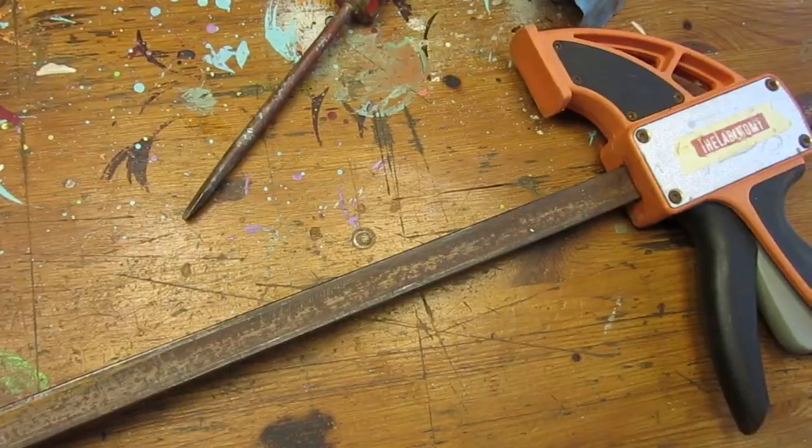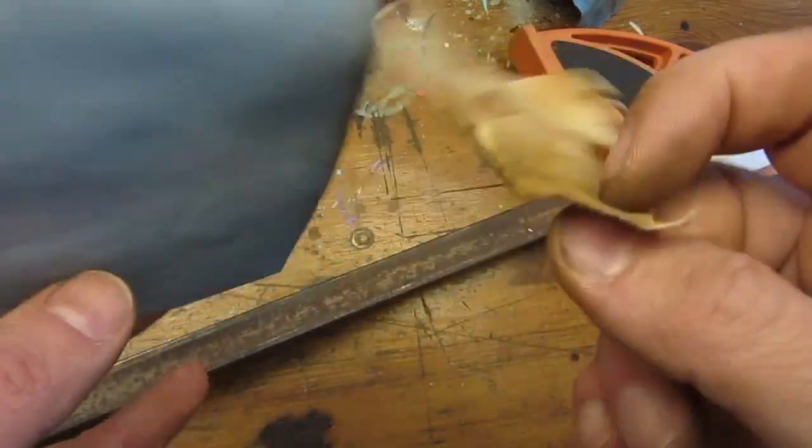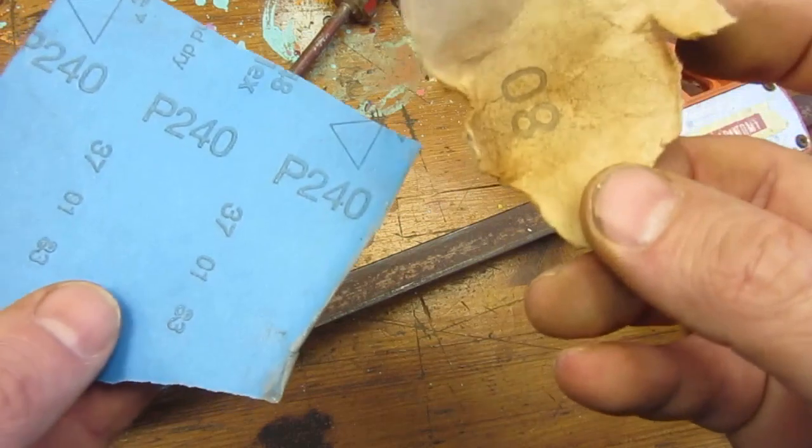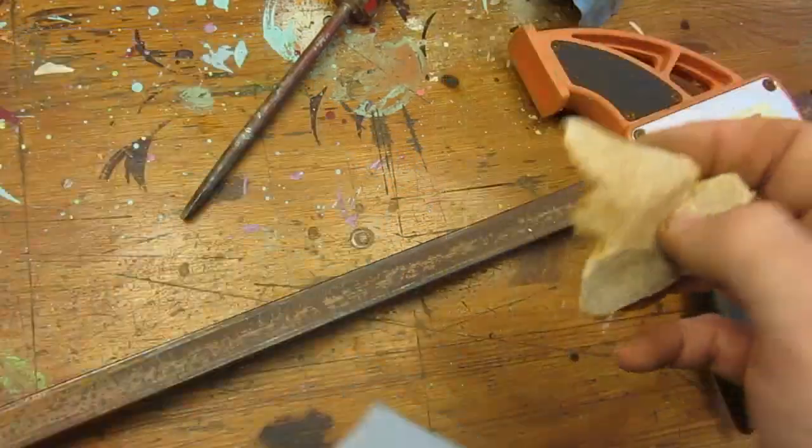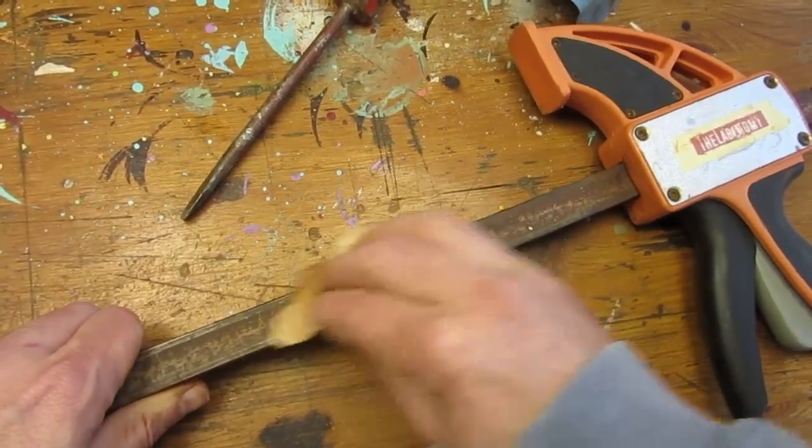As I could not give the bars a full white vinegar bath, I still have here and there patches of rust that I will now take care of with sandpaper. 80 grit for the pre-work, 240 grit for the finish.